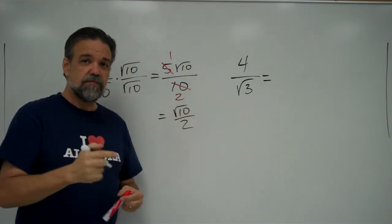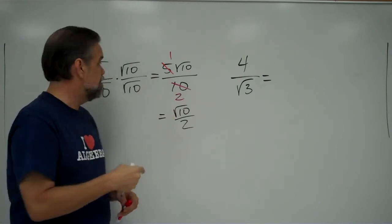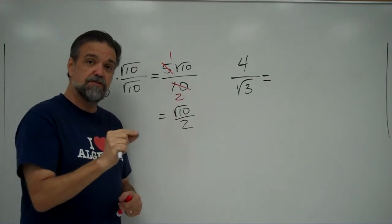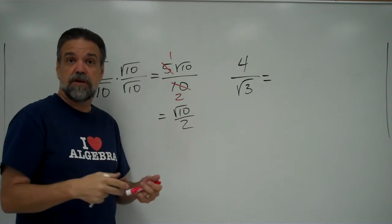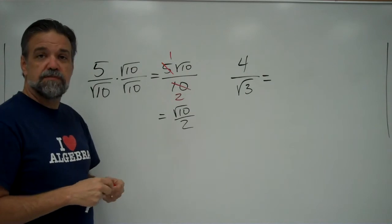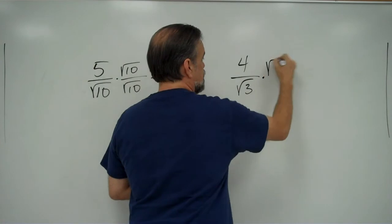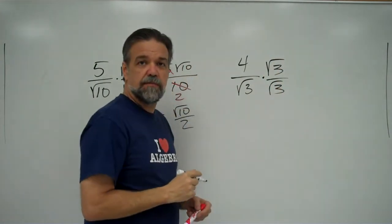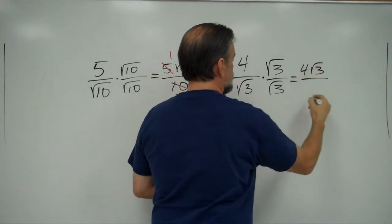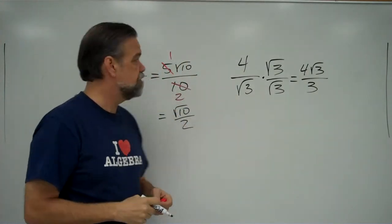My recommendation is when you do a problem like this, take a calculator, divide 5 by the square root of 10, then divide the square root of 10 by 2, and check that your decimal approximations match each other. It's a good way of verifying that you've done it correctly. For 4 over the square root of 3, same type of thing — multiply both numerator and denominator by the square root of 3, and you get 4 square root of 3 over 3.